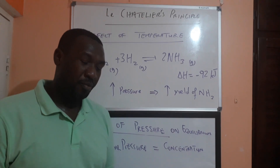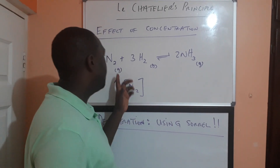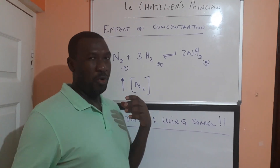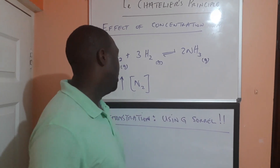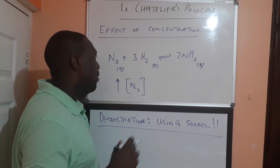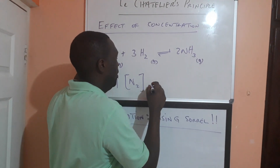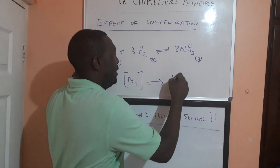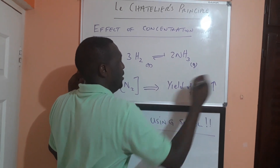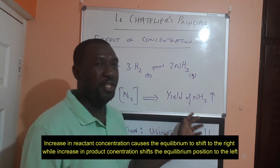That's the effect of pressure. Let's look at the effect of concentration. If I increase the concentration of one of the reactants, the system wants to oppose that change to restore the original equilibrium. So if I increase the concentration of nitrogen, the system will react the nitrogen with hydrogen to produce ammonia. So if I increase the concentration of nitrogen, the yield of ammonia increases, equilibrium shifts to the right, and the yield or conversion percentage increases.